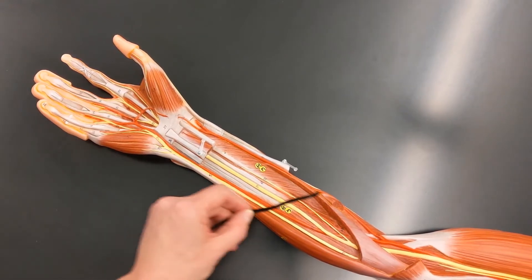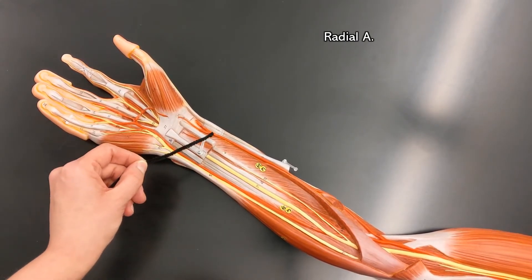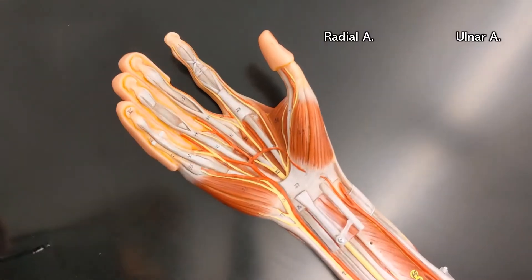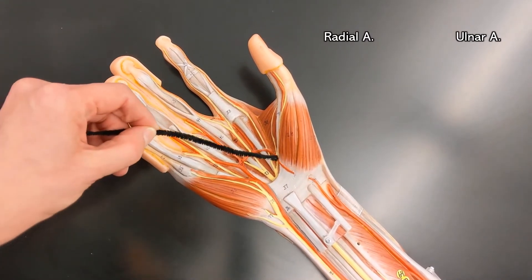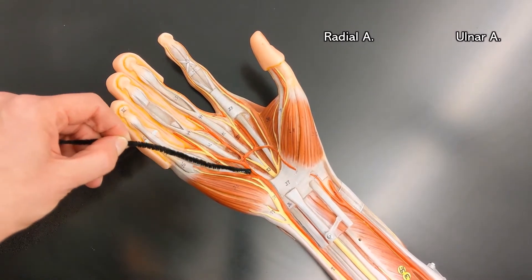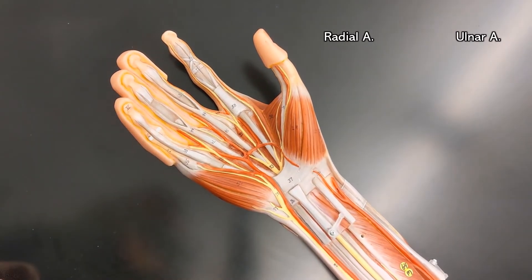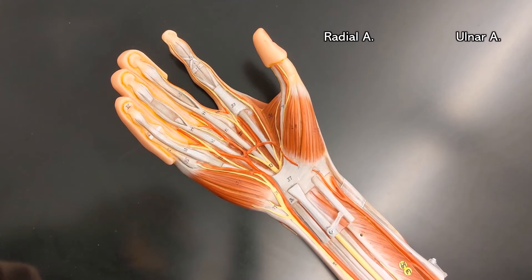The ulnar and radial arteries go up towards the hand, and on the hand itself you can see this loop shape which is the superficial palmar arch.